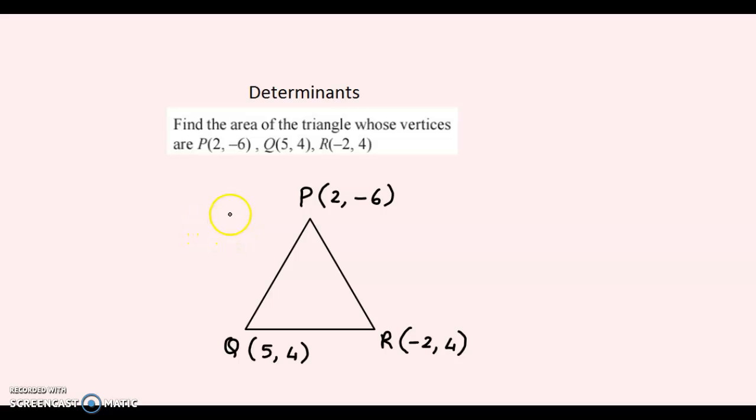In this video, we discuss an example from determinants. The question is: find the area of the triangle whose vertices are P(2, -6), Q(5, 4), and R(-2, 4).